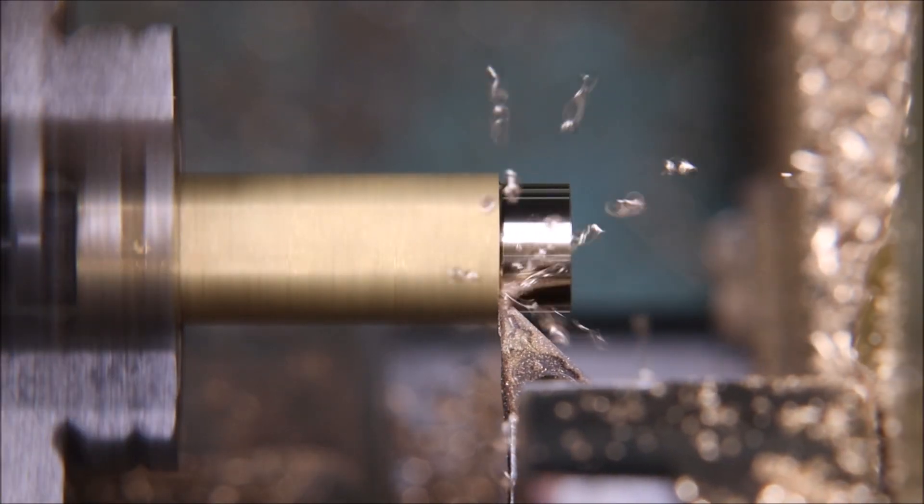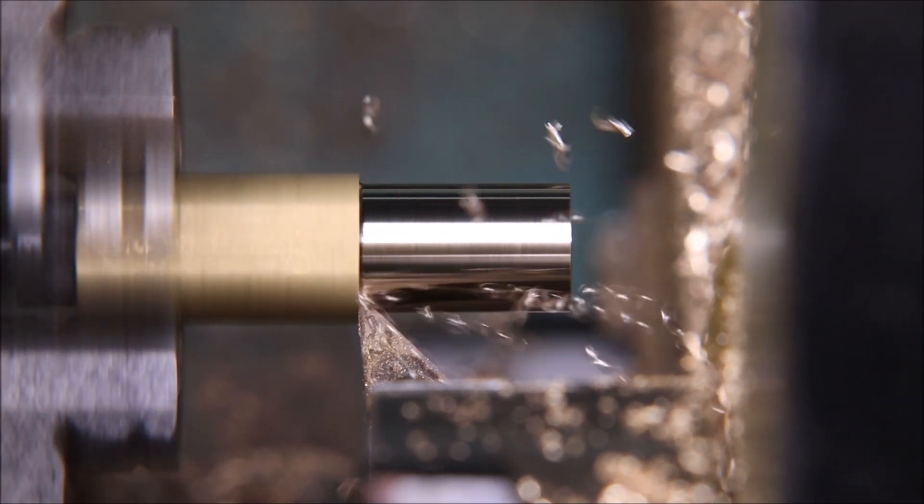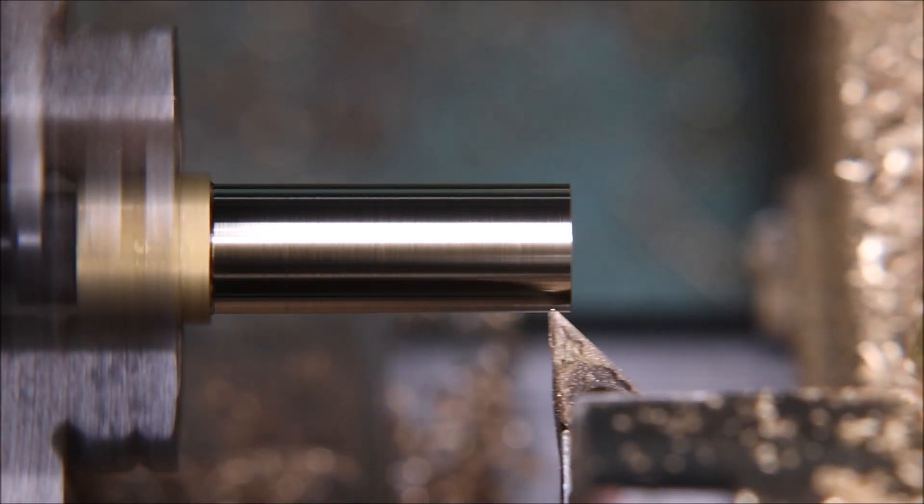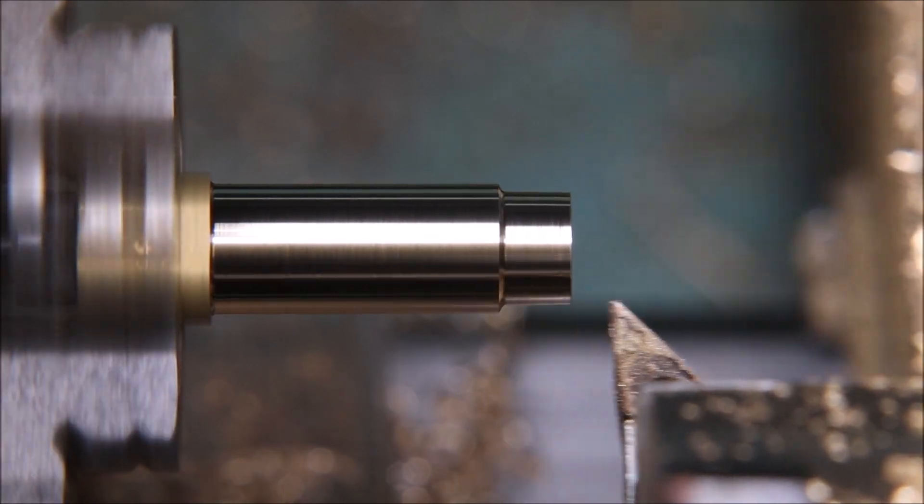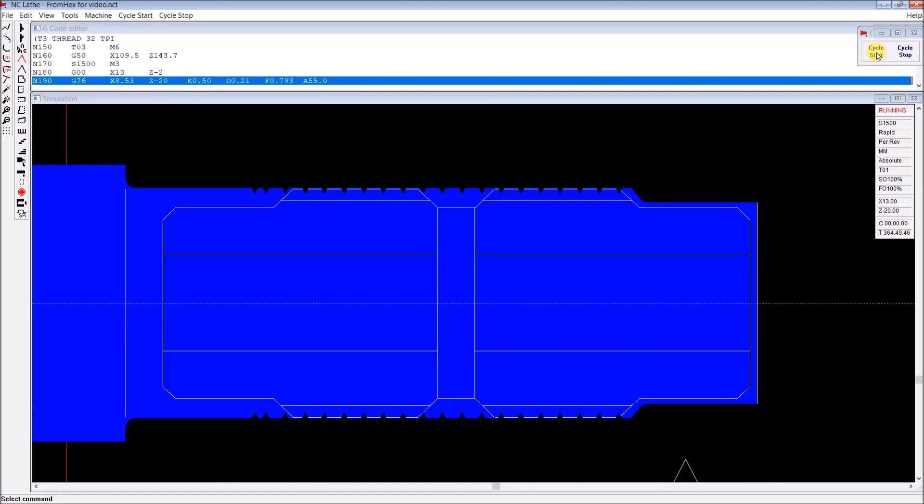That's a Sumitomo FC type finishing insert which is what I basically use as my general purpose insert. Here we're simulating cutting the thread for both of the parts that we're making. It's a 32 TPI model engineer thread.